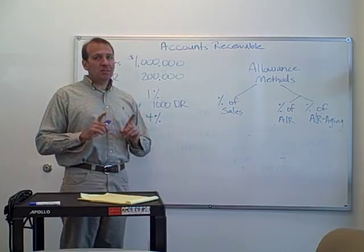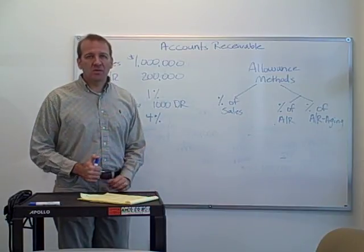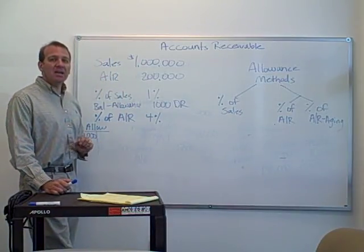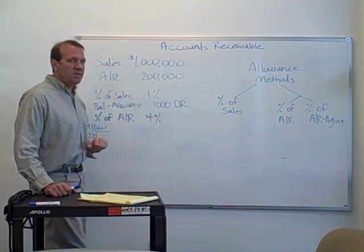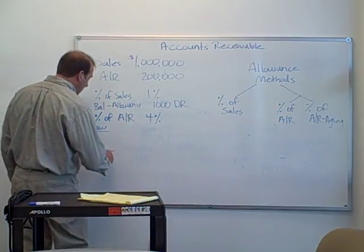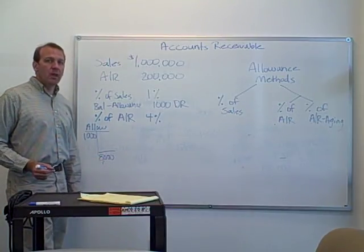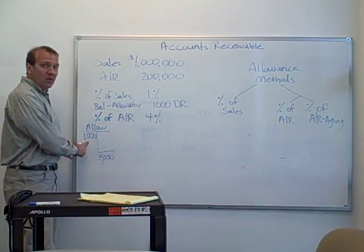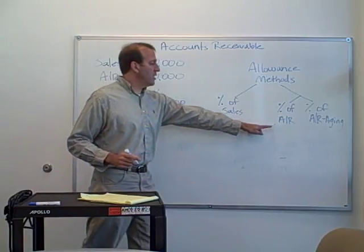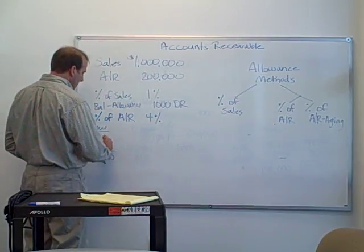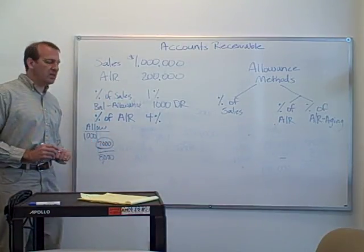When we did this using percentage of sales, that was our adjustment. When we use the percentage of accounts receivable, that percentage is the ending balance. If you're using 4% of accounts receivable as our allowance, we want that to be our ending balance: $8,000. Our current balance is $1,000, and we want it to be $8,000. So you take the percentage — that's the ending balance — and back into your adjustment, which is $7,000.